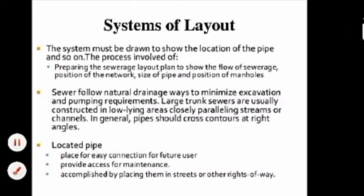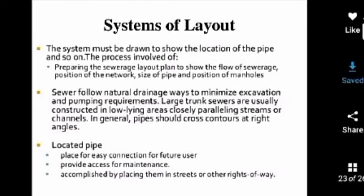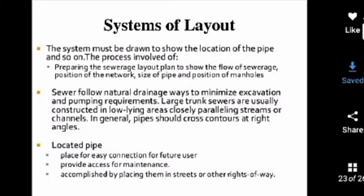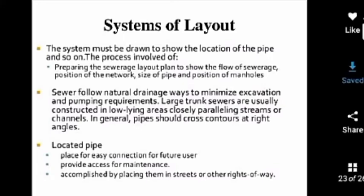To summarize the key parameters for laying sewer pipelines: preparation of sewage layout, choice of direction of sewage flow, transportation of sewage, pattern to be applied, the system of sewage layout, position of the entire network, size of the pipe — that is, diameter of the pipe — and the position of manholes.